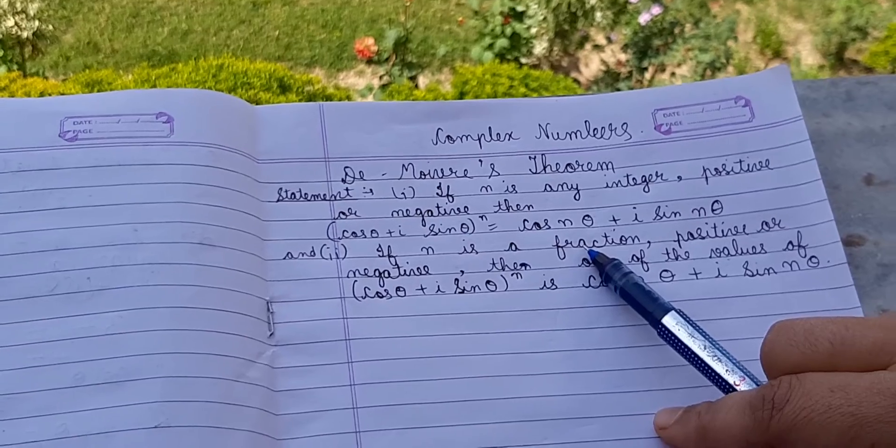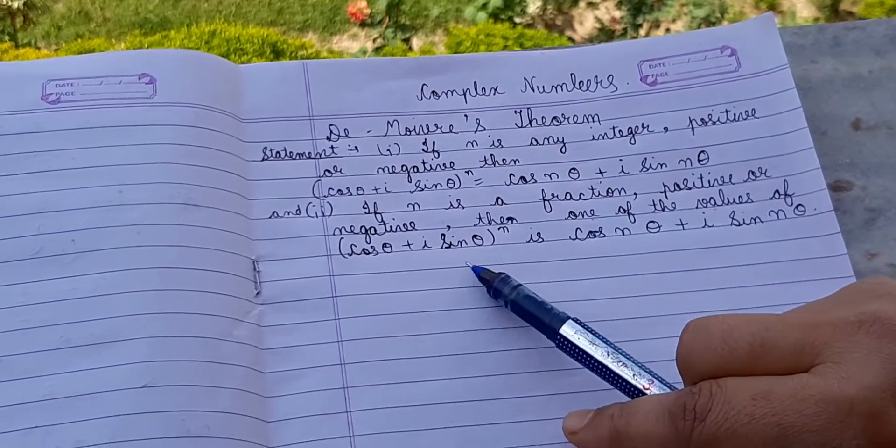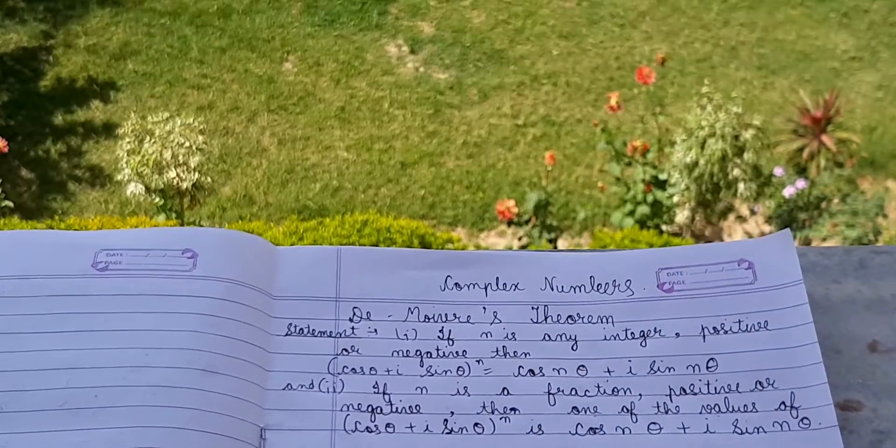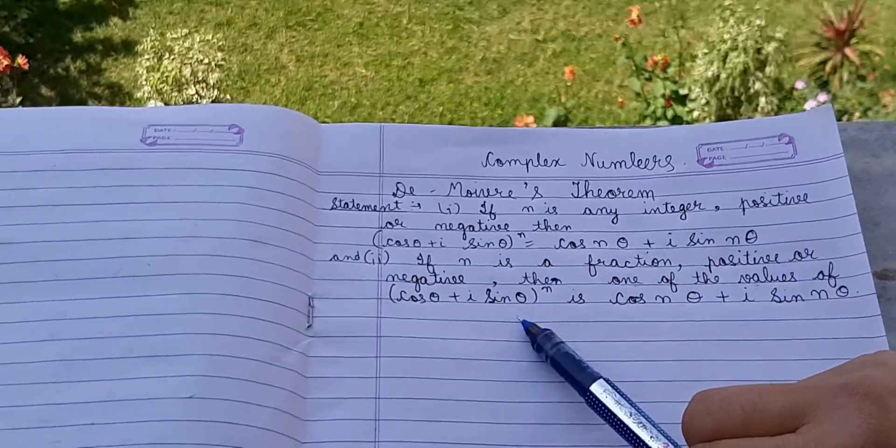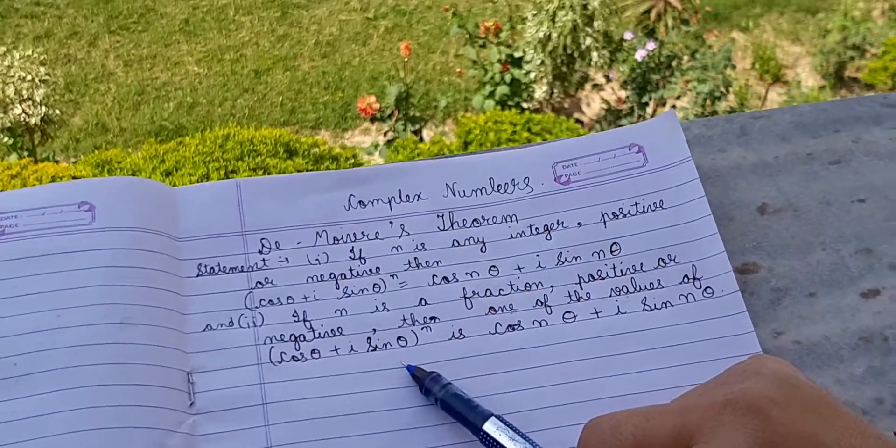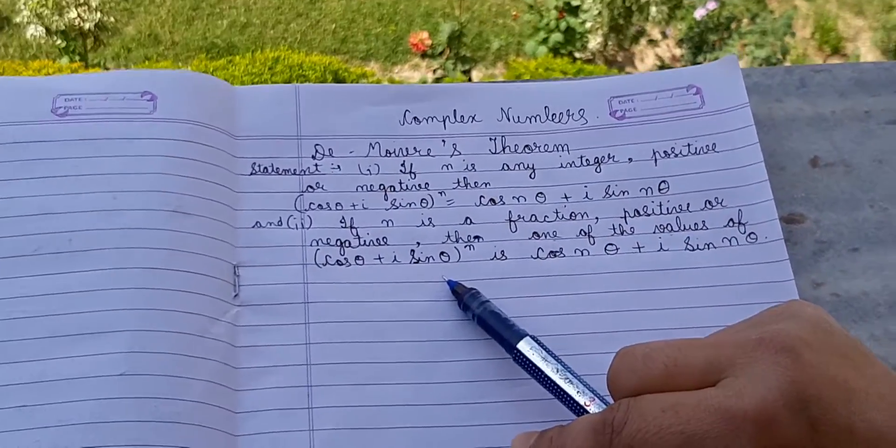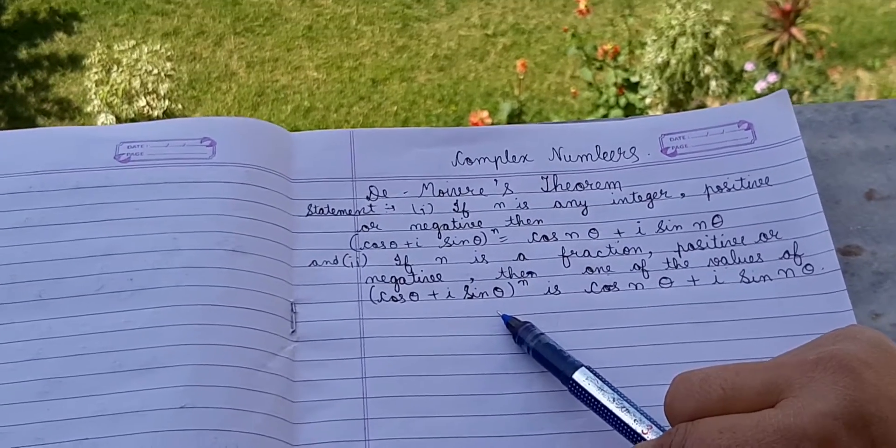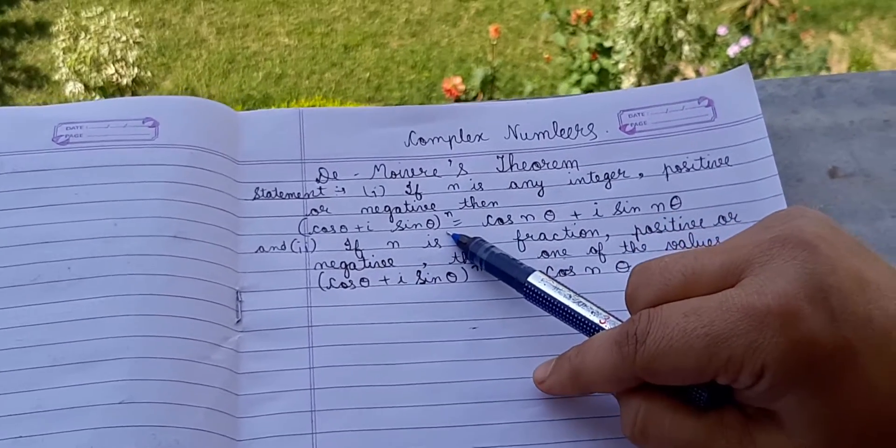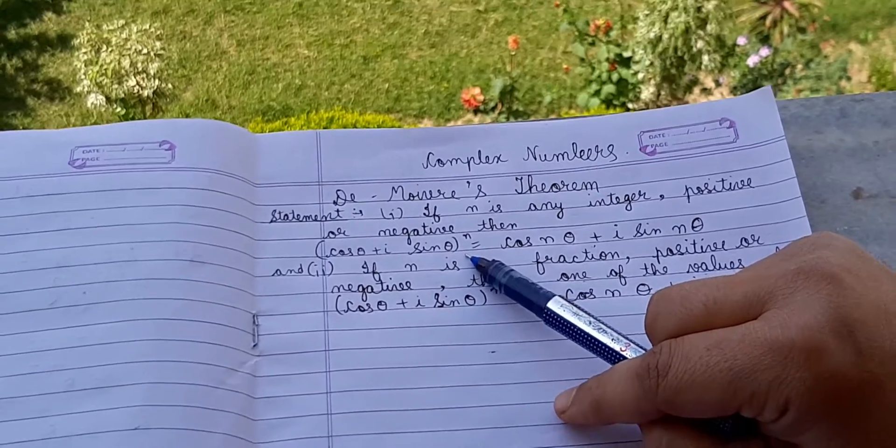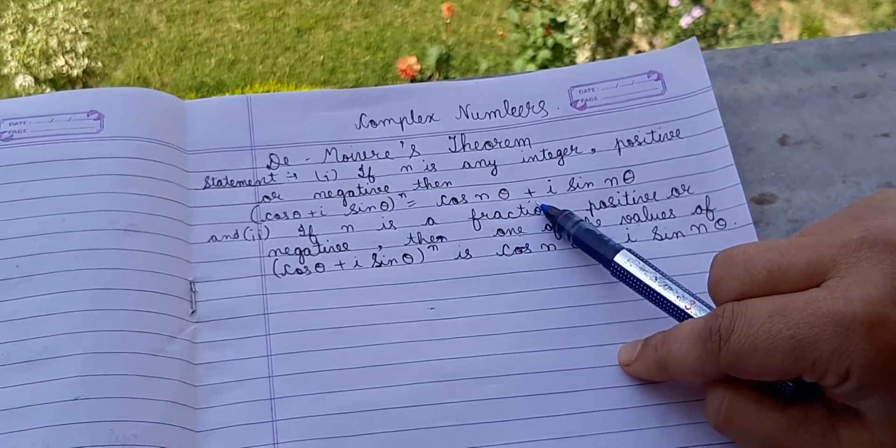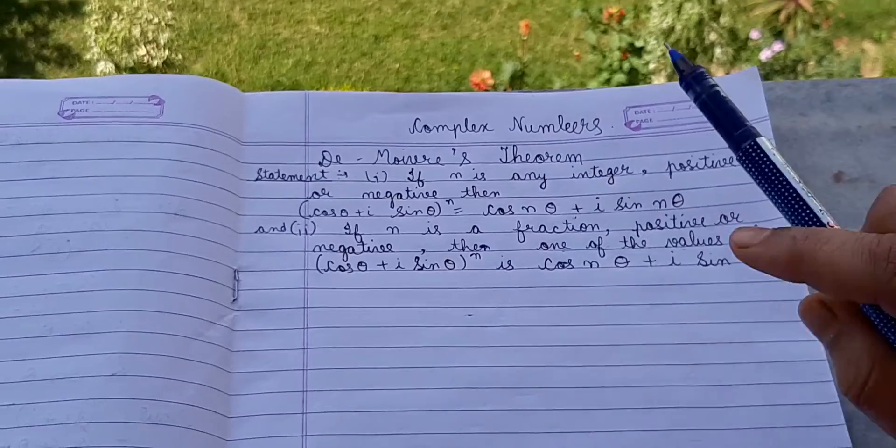then one of the values of (cos θ + iota sin θ) raised to power n is cos nθ + iota sin nθ. So according to De Moivre's theorem, if we have the form (cos θ + iota sin θ) raised to power n, it can be written as cos nθ + iota sin nθ.